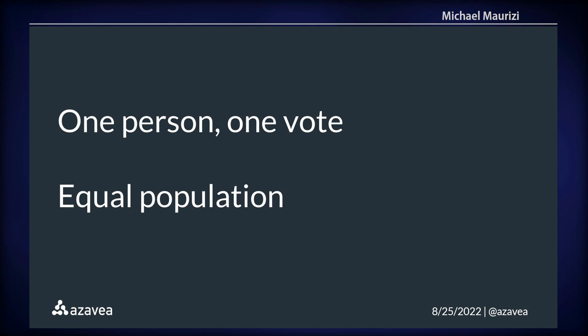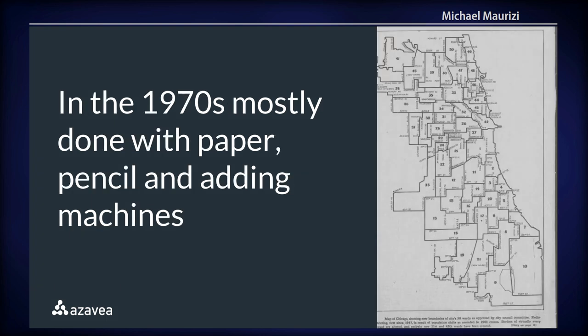Those principles are essentially one person, one vote, and equal population — the districts must have just about equal population. For Congress, districts can only have a one-person deviation; they need to be almost exactly the same population. For states and localities there's a little more leeway. We've built all of this into the software so it knows whether you're drawing a congressional district or a state or local one, and applies the appropriate constraints.